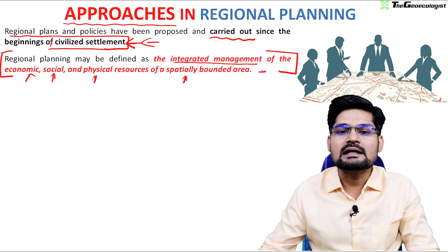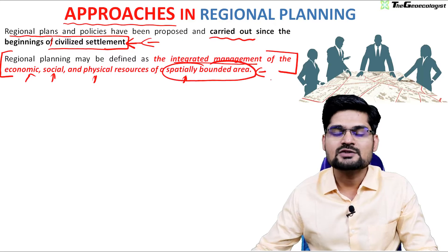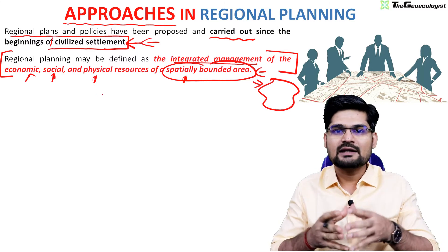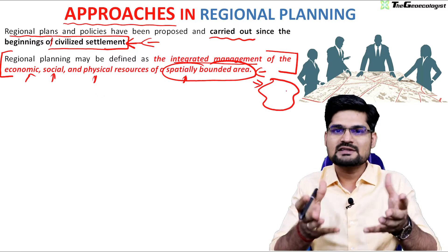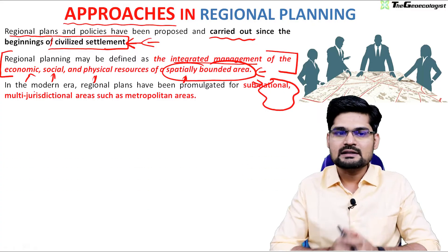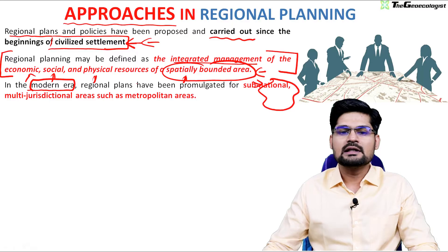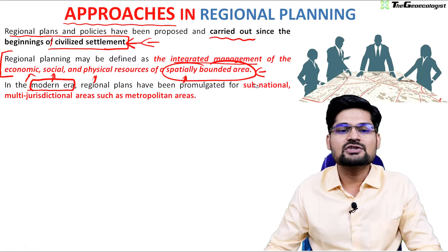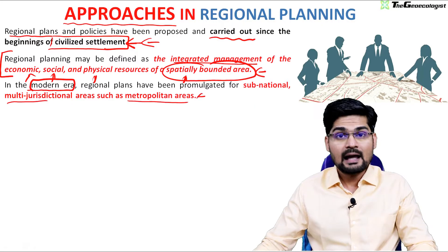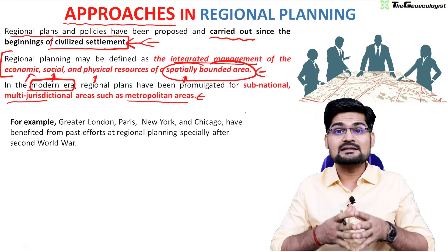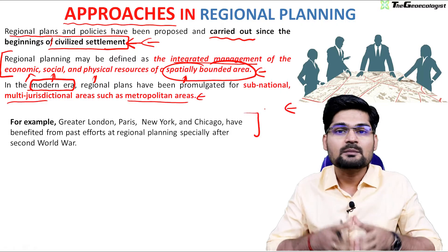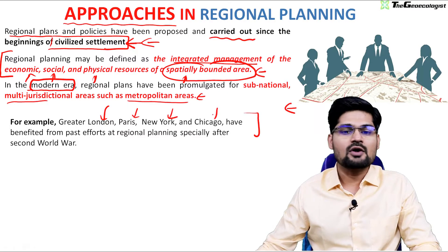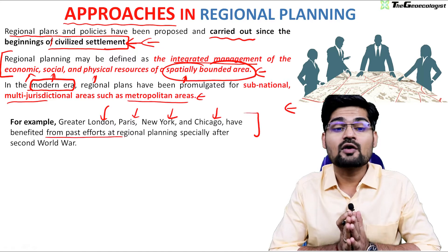A spatially bounded area means it has to have a clear-cut, delimited boundary. In the modern era, regional plans have been promulgated at subnational, multi-jurisdictional areas such as metropolitan areas, bringing urban development plans, rural development plans, and several others. Cities like Greater London, Paris, New York, and Chicago have all benefited from these efforts of regional planning.